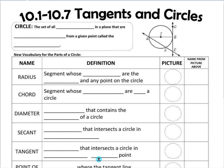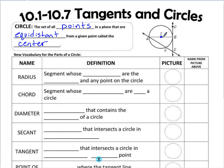A circle is a set of all points in a plane — on a two-dimensional surface — that are equidistant from a given point, and that given point is called the center of the circle. In my diagram, point C is the center, and all points on the edge of the circle are equidistant, meaning every segment drawn from the center to a point on the circle has the same length.